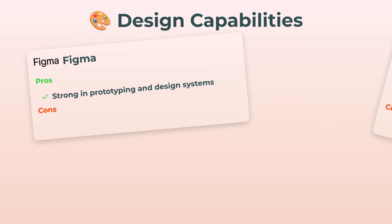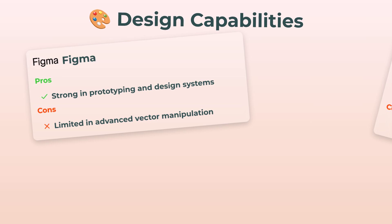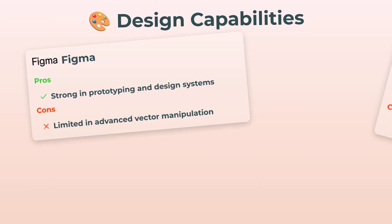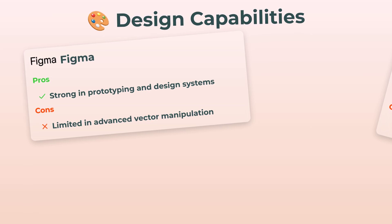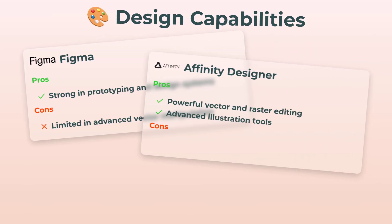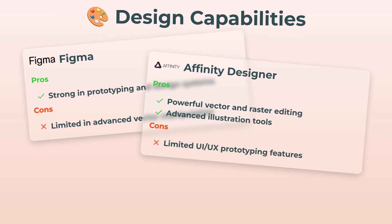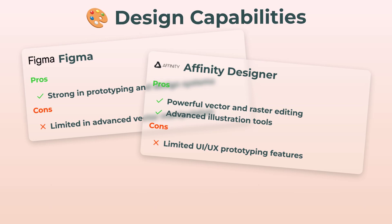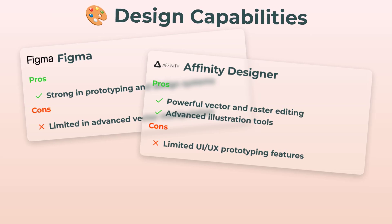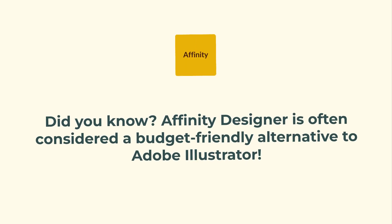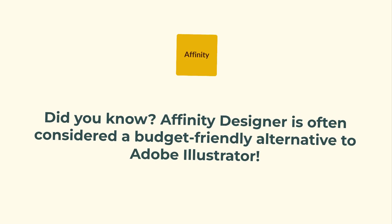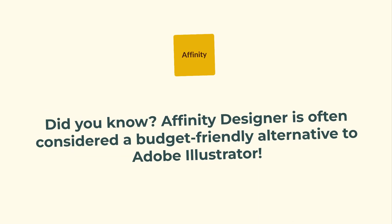Moving on to design capabilities — this is where things get interesting. Figma is super strong in prototyping, design systems, and quick UI/UX flows, but when you try to get fancy with advanced vector work, not so much. Affinity Designer is like, hold my pen — it nails powerful vector and raster editing, and the illustration tools are comprehensive. You do miss out on some advanced UI/UX prototyping features, but for pure illustration or vector art, Affinity Designer is the clear champ. It's often seen as a budget-friendly alternative to Adobe Illustrator, so if you always wanted those premium vibes without the premium price, now you know.